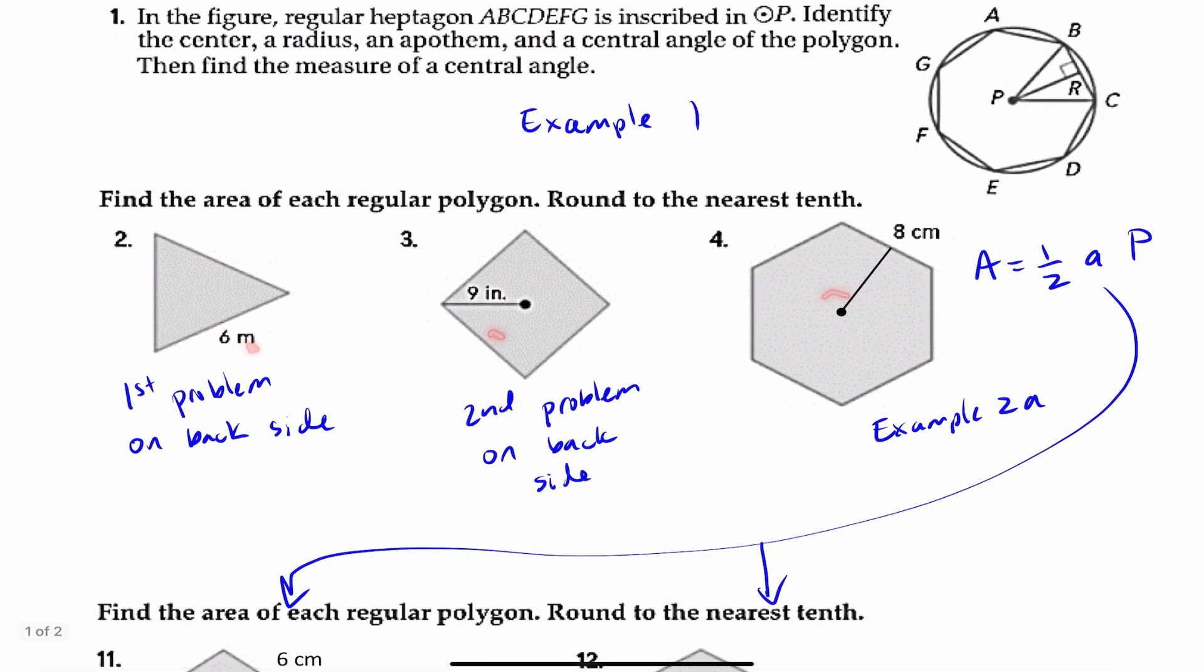Number two, three, and four, find the area of each regular polygon. You're going to round to the nearest tenth. Number two is essentially a problem that's similar to the first problem on the back side of your notes. Number three is similar to the second problem on the back side of your notes.